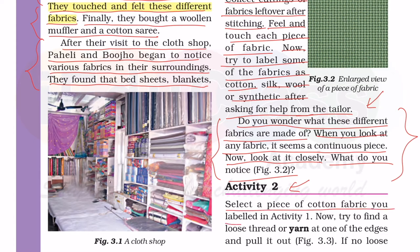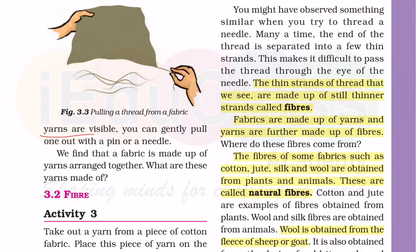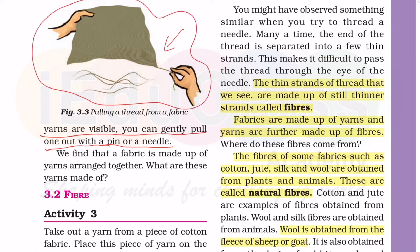Select a piece of cotton fabric you labeled in activity one. अगर आप एक piece को लोगे तो दिखेगा यह continuous से बना है, पर अगर ध्यान से अंदर देखो तो आपको छोटे-छोटे threads दिखेंगे। Now try to find a loose thread or yarn. One of the edges - pull it out. We find that a fabric is made up of yarns arranged together.